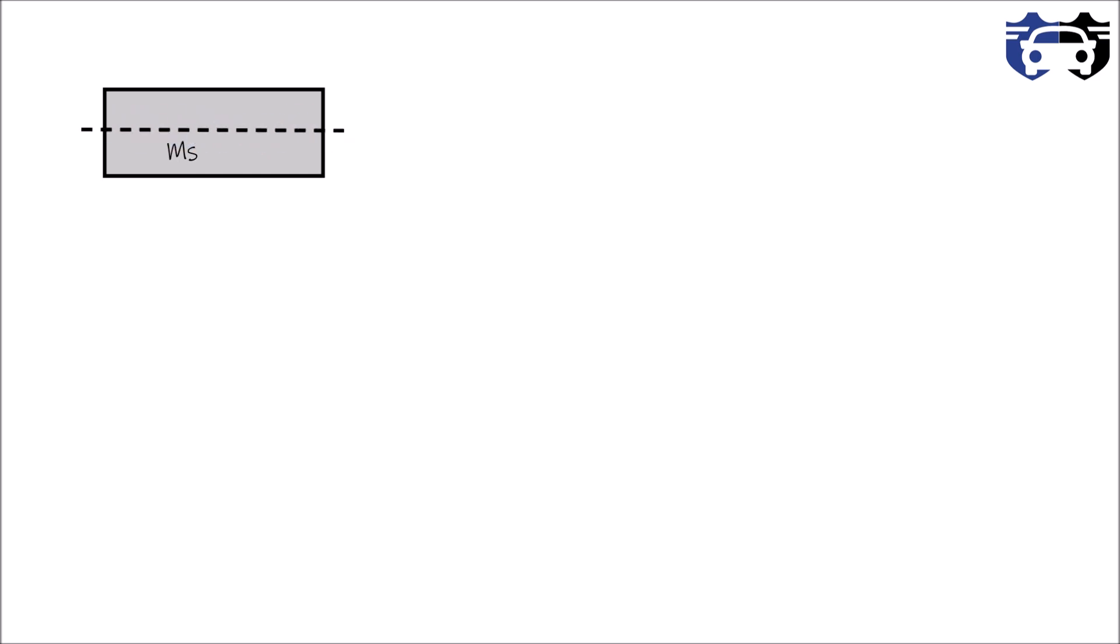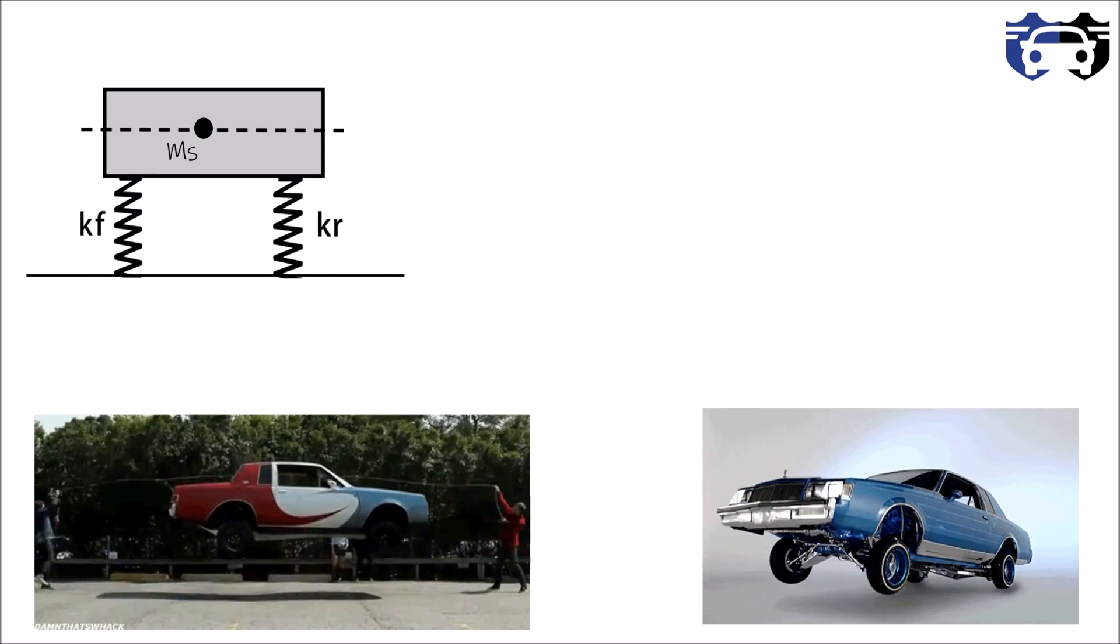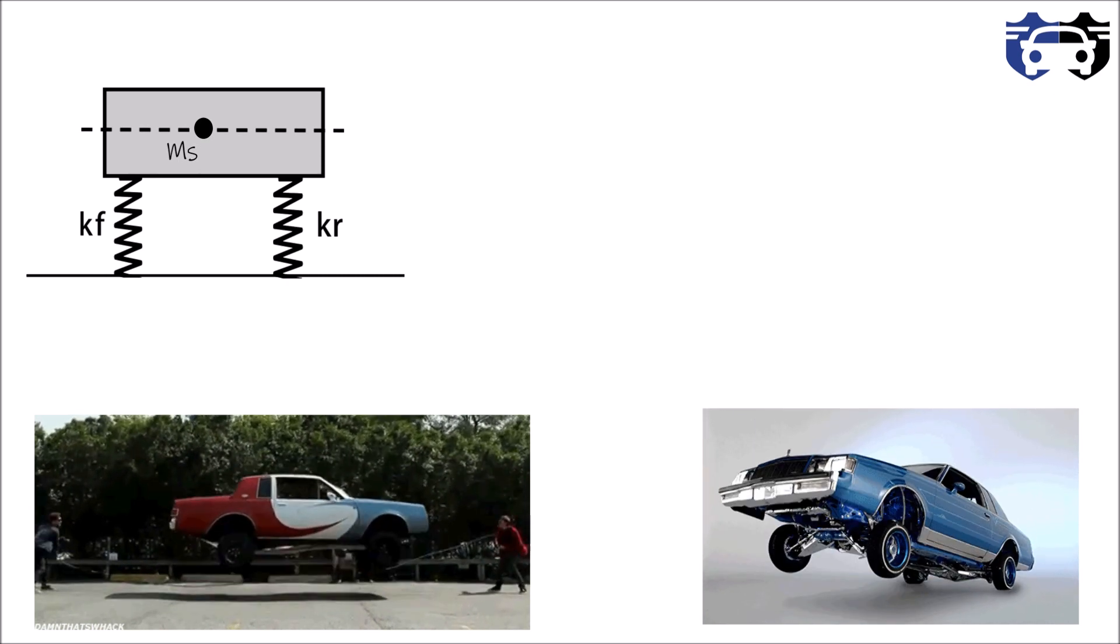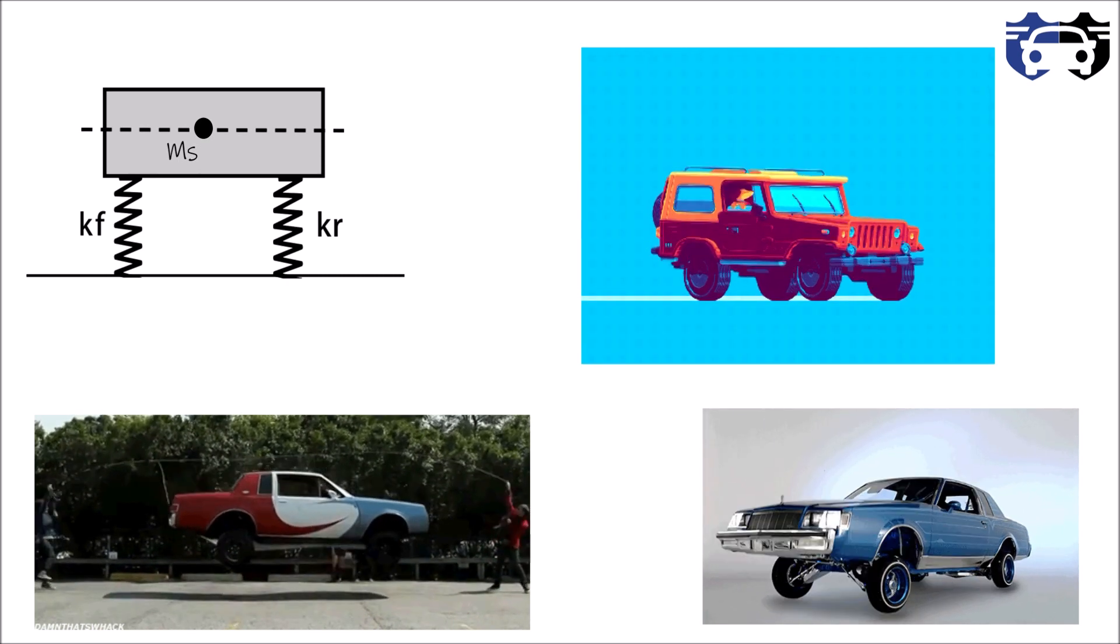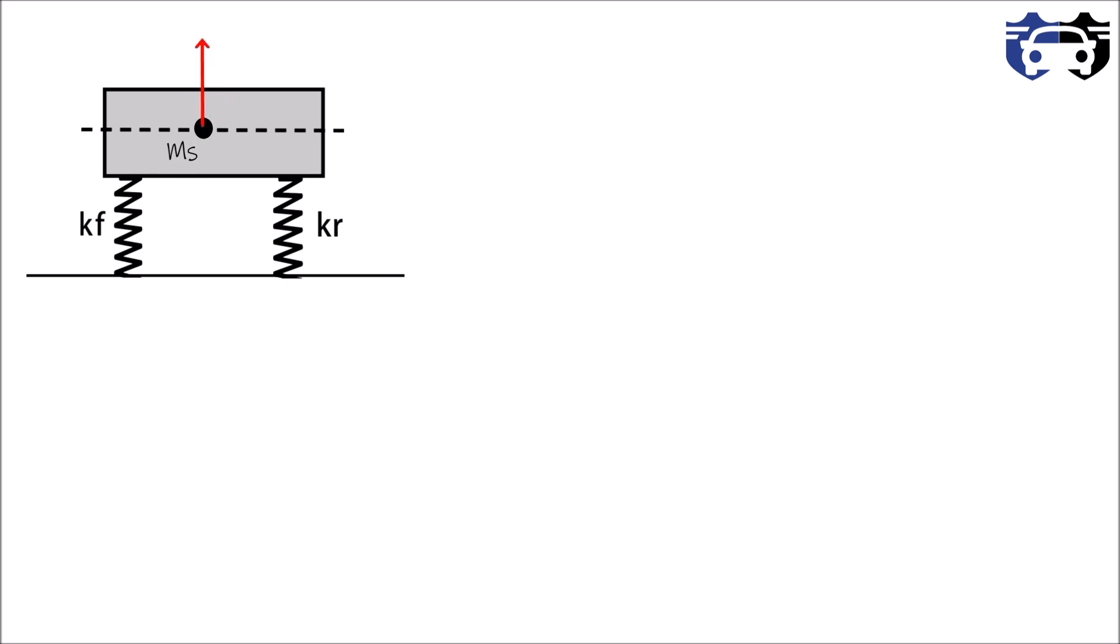Now when the vehicle encounters a bump it can have two modes. It will bounce up and down or it will pitch about the center of gravity. Generally bounce and pitch both happens together. So here the direction of bounce is shown by z upwards, and considering that the car is pitching in clockwise sense with angle theta. Position of CG is a from the front and is b from the rear.